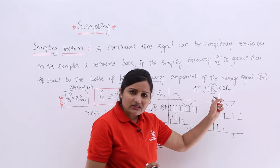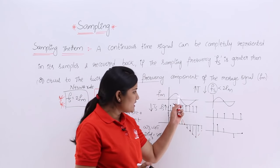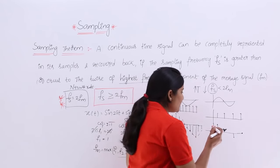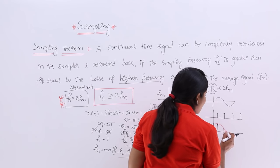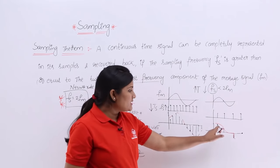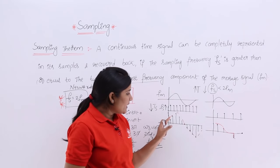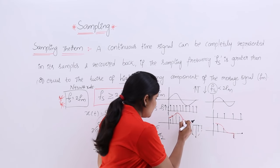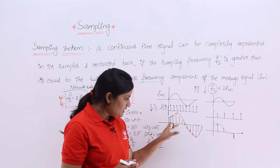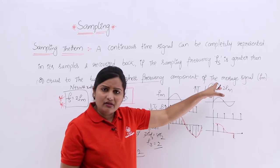If you consider the envelope of this undersampled signal, it does not match your actual signal — it is not your original message signal. But in the properly sampled case, the envelope corresponds to your original message signal and you can recover it back. From the undersampled signal, you cannot recover the original signal.